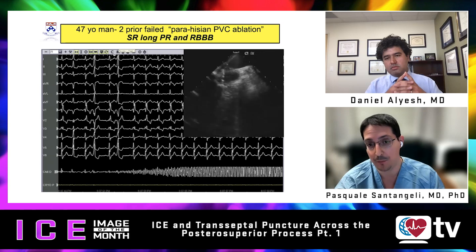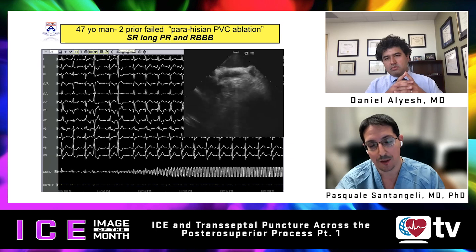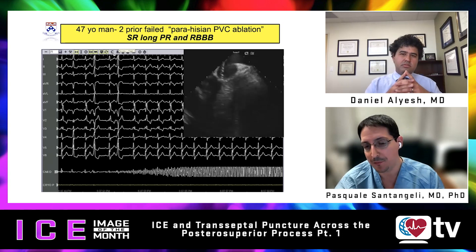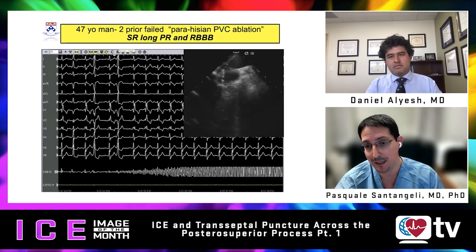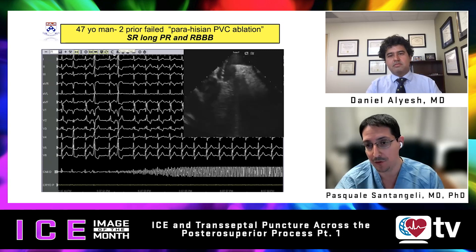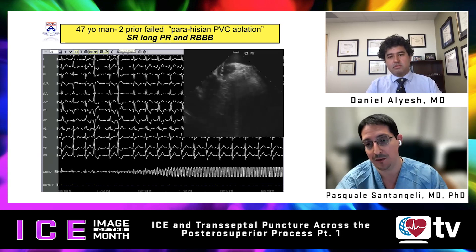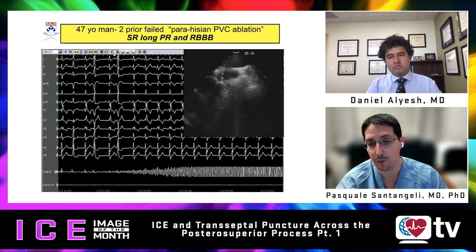This case was performed with cryoablation, as seen by the artifact. The case had previously been attempted thinking it was a Parisian PVC and was ablated on the right ventricular side, causing transient PVC suppression that wasn't durable and also injuring the right bundle branch. The PVC was actually more septal — in the posterior superior process — and was targeted from the right atrium using cryo early on.